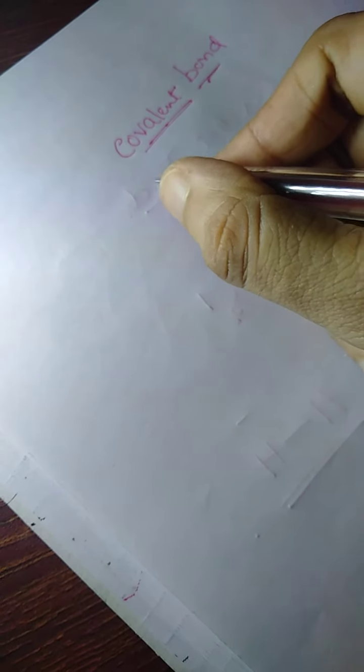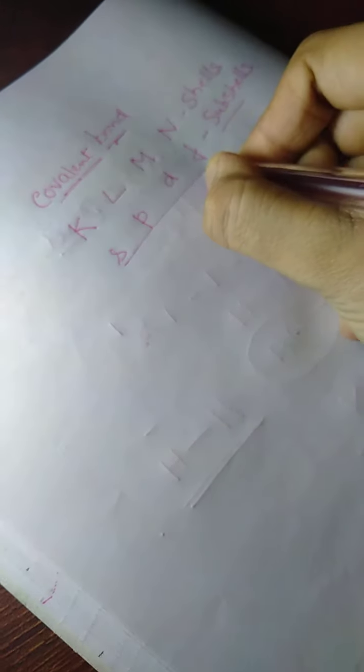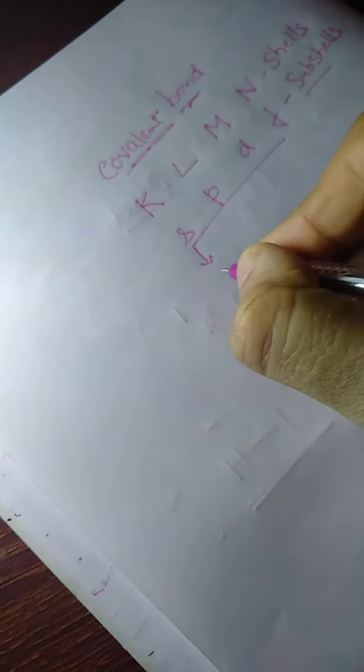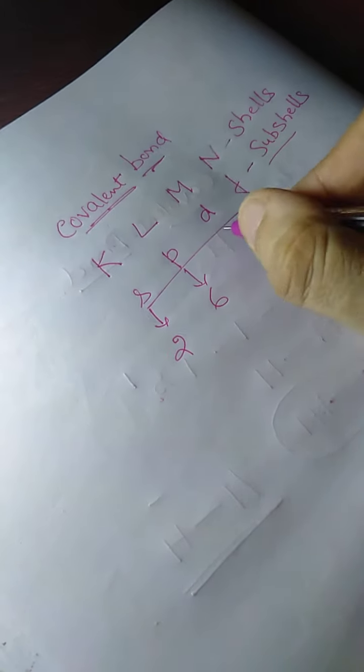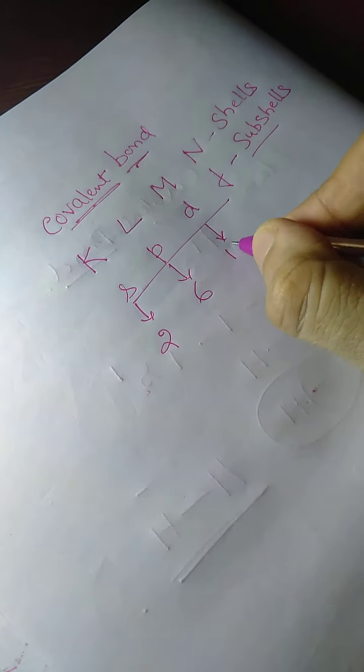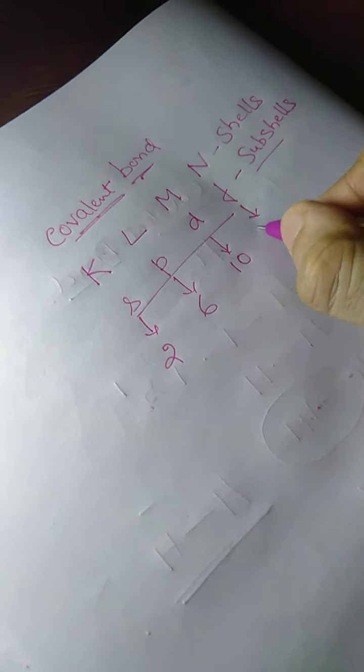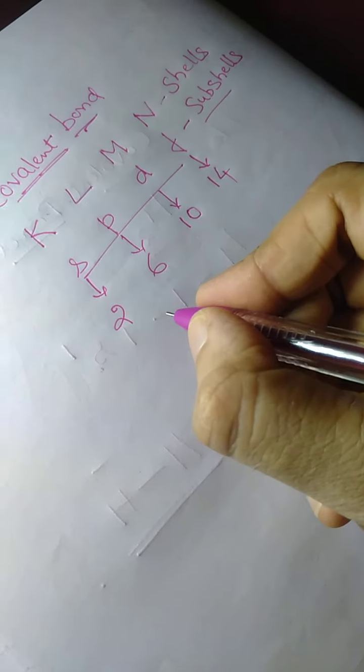We know an atom has K, L, M, and N shells, and S, P, D, F sub-shells. The S sub-shell can accommodate 2 electrons, P sub-shell can accommodate 6 electrons, D sub-shell can accommodate 10 electrons, and F sub-shell can accommodate 14 electrons.